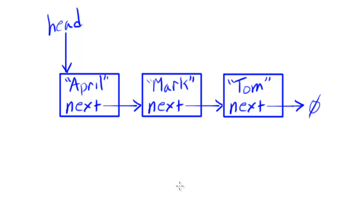We said that recursion was this problem-solving strategy for breaking larger problems into smaller problems of the same form. We also looked at some examples of recursive structures you may find in nature — a tree, ice crystals, a shell — where larger structures are composed of smaller structures of the same form. And we also have recursive data structures, and one of those is the linked list.